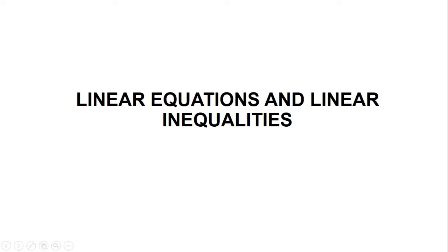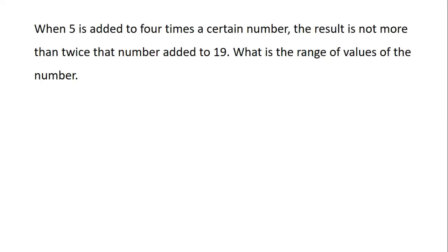We are still on the topic linear inequalities. In the previous video, we took an example on word problems that involve the use of linear inequalities. In this video, we are going to consider another example. When 5 is added to 4 times a certain number, the result is not more than twice that number added to 19. What is the range of values of the number?